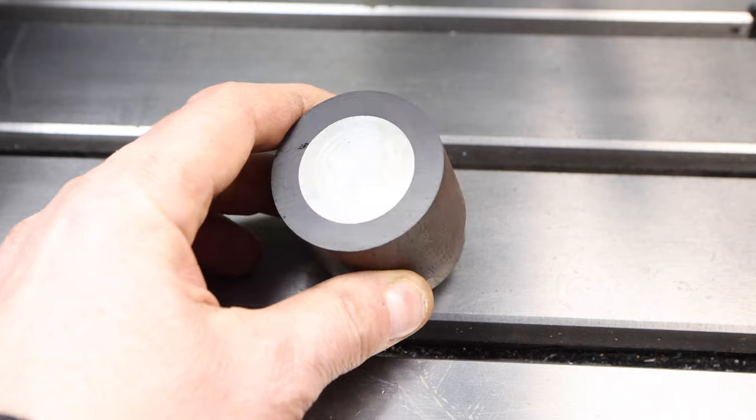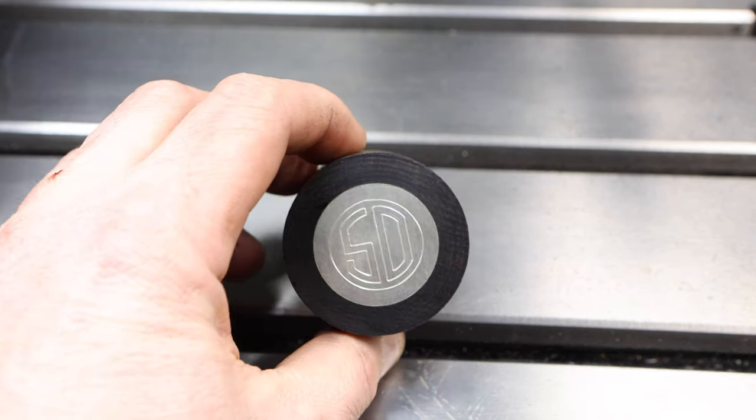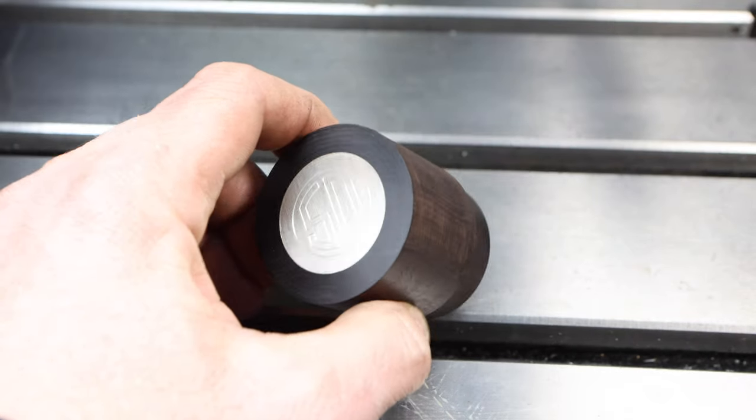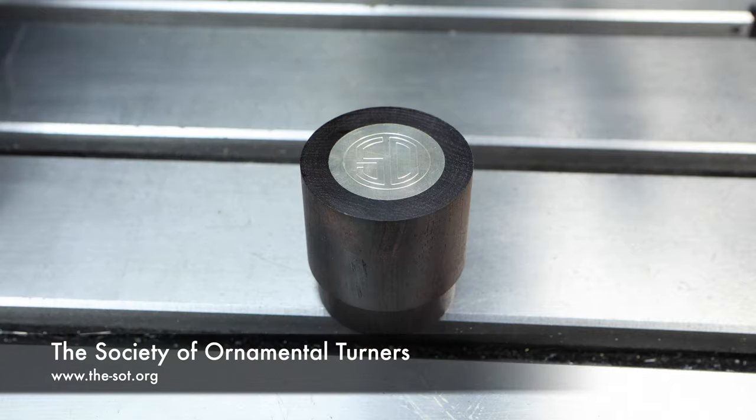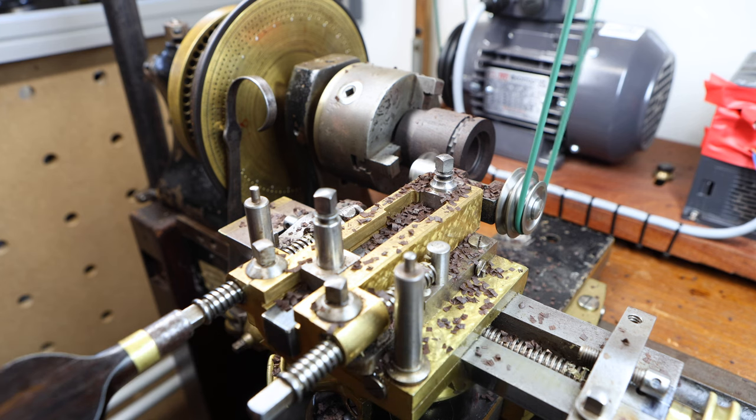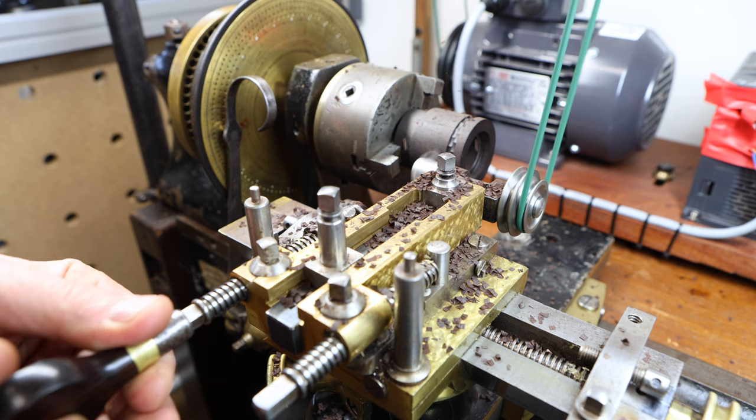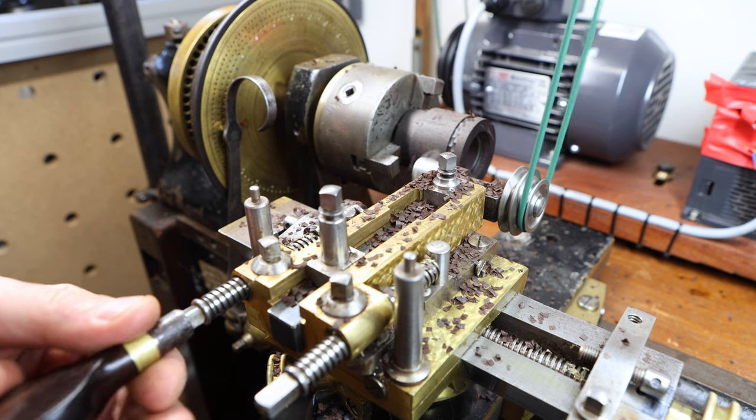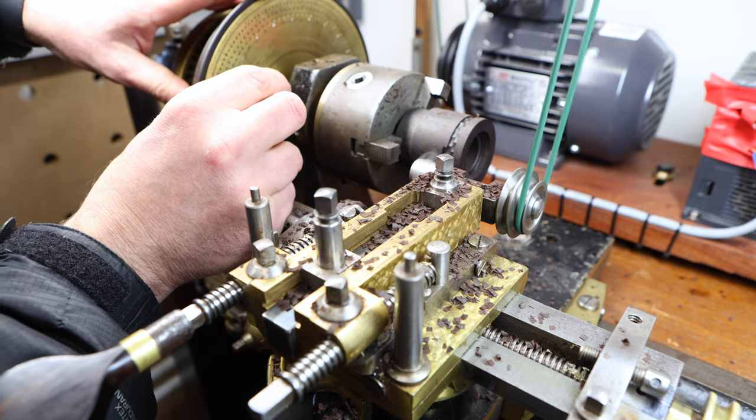Now I've recently become interested in a technique called ornamental turning and I'm lucky enough to be the custodian of a beautiful antique ornamental turning lathe on loan from the Society of Ornamental Turners. So I'm going to use this machine to try and put a pattern in the side of this workpiece. Now this doesn't quite go to plan for reasons that will become apparent later in the video but I thought I'd leave the footage in because I think it's an interesting technique and it gives you guys a chance to see this beautiful old machine in action.